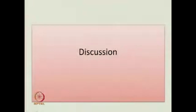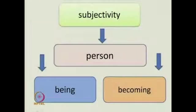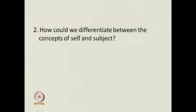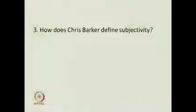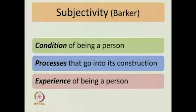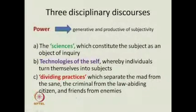Let us go to the discussion. First question: how is subjectivity seen in relation to personhood? Subjectivity is seen as both a process and an essence — as being and becoming, with becoming more highlighted here. How could we differentiate between concepts of self and subject? Self refers to a certain interiority, and subject is cultural. How does Chris Barker define subjectivity as a condition? It is a process and it is an experience of being a person.